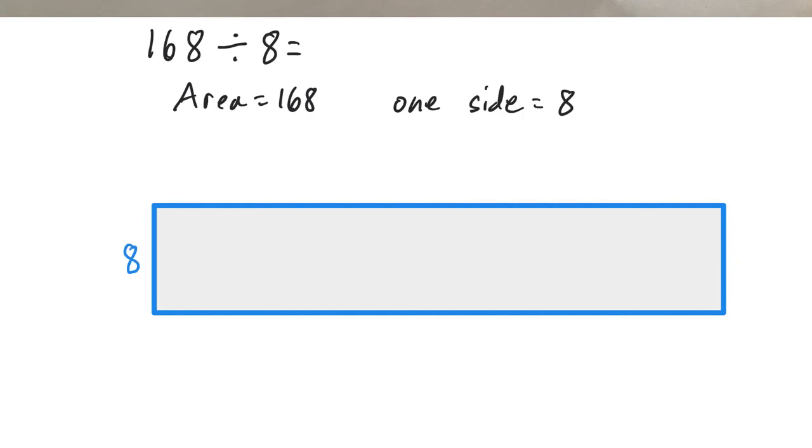So one side is 8, and the area of this whole thing is 168. So we're going to multiply our way up. And I'm going to start, you can do it in whatever way you want. I'm going to start with 10. So I'm going to make a side that's about 10. And that means I'm going to have 8 times 10 equals 80. And that would give me an area of 80 for this part.